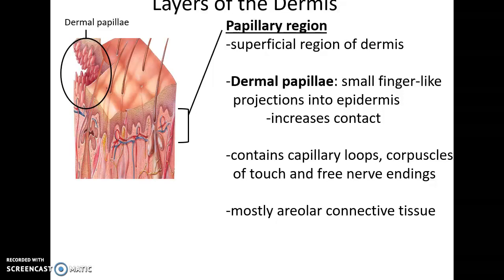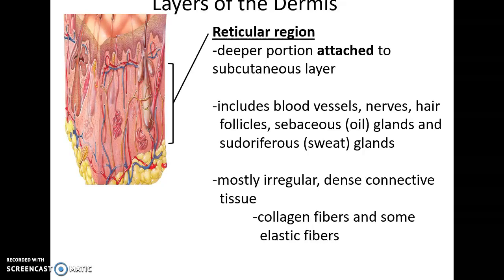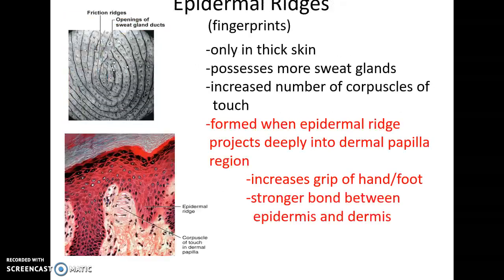The dermal papillae also contain corpuscles of touch for the sensation of touch and free nerve endings for temperature, pain, and itch. The papillary region is primarily made of areolar connective tissue. Below that, the reticular region is much tougher — made of dense irregular connective tissue with collagen and elastic fibers allowing skin to resist forces in all directions; it houses blood vessels, nerves, hair follicles, sebaceous glands, and sudiferous glands. In thick skin only, dermal papillae protrude so far that they form ridges — fingerprints — with many sweat glands and corpuscles of touch, enhancing grip.